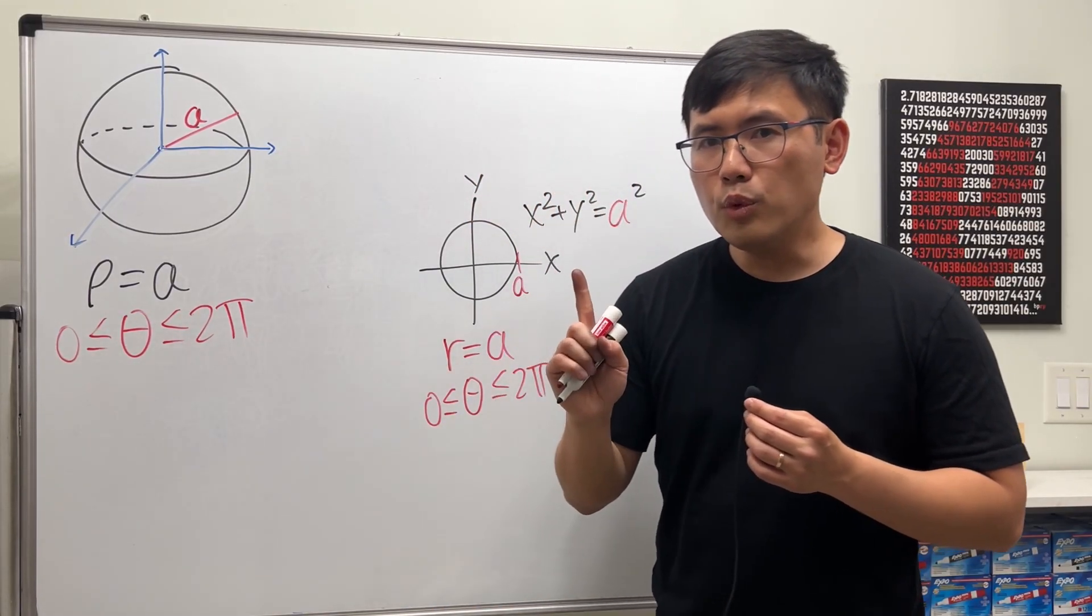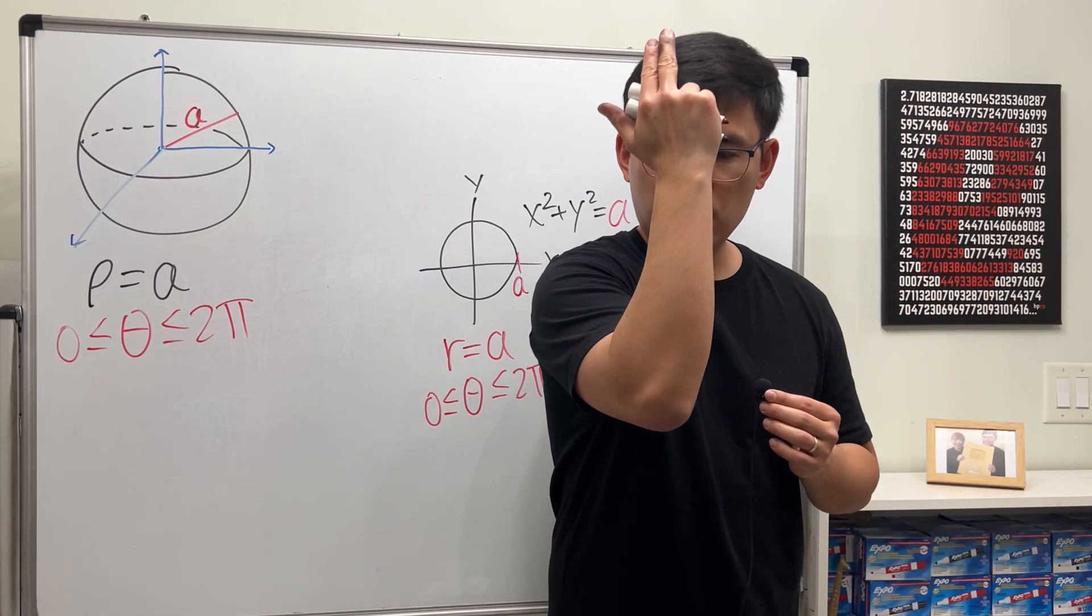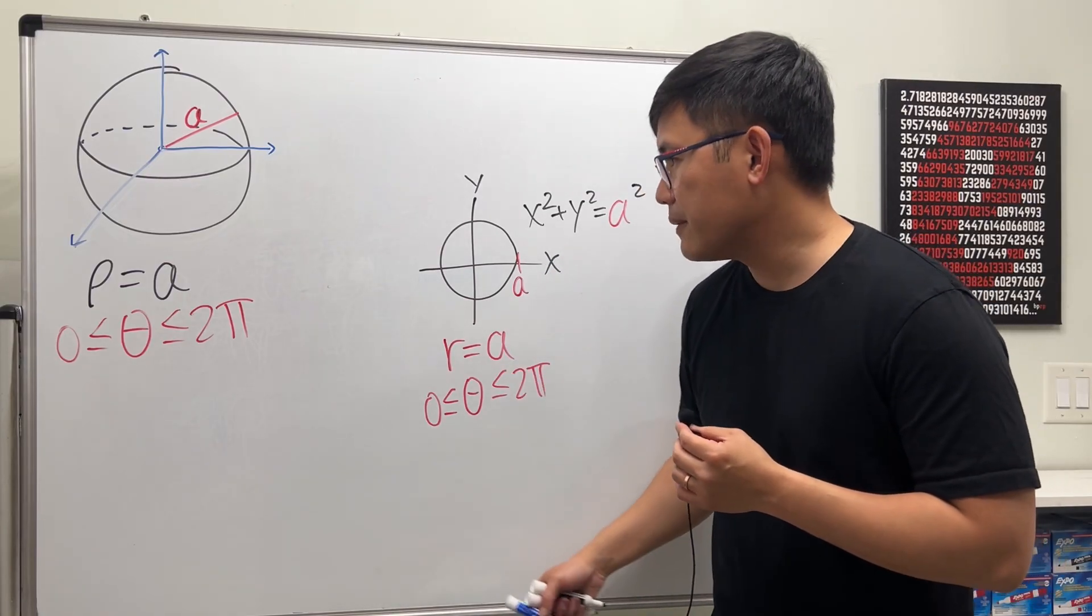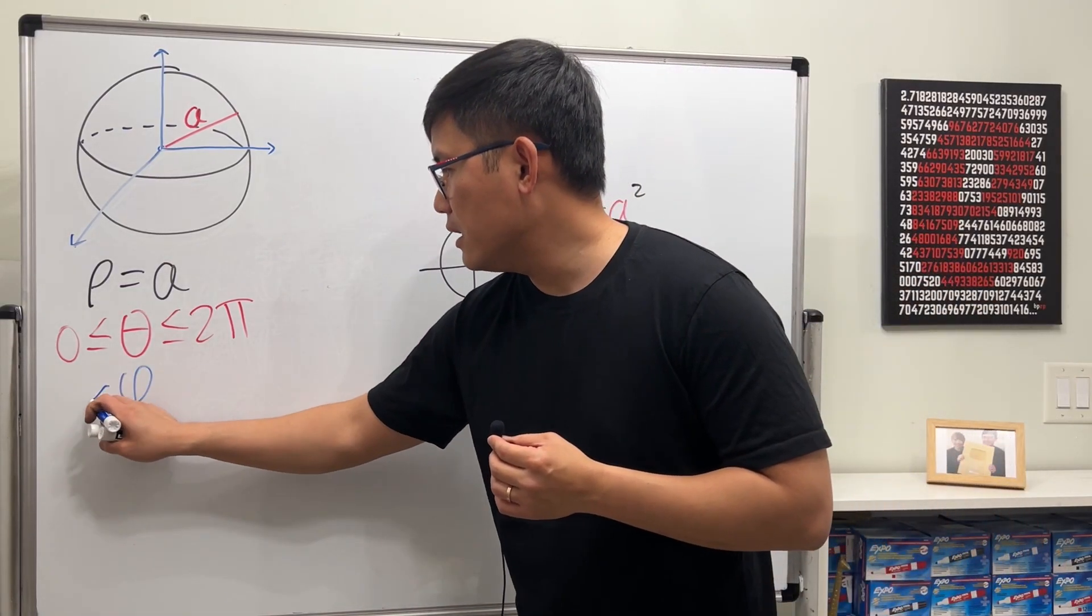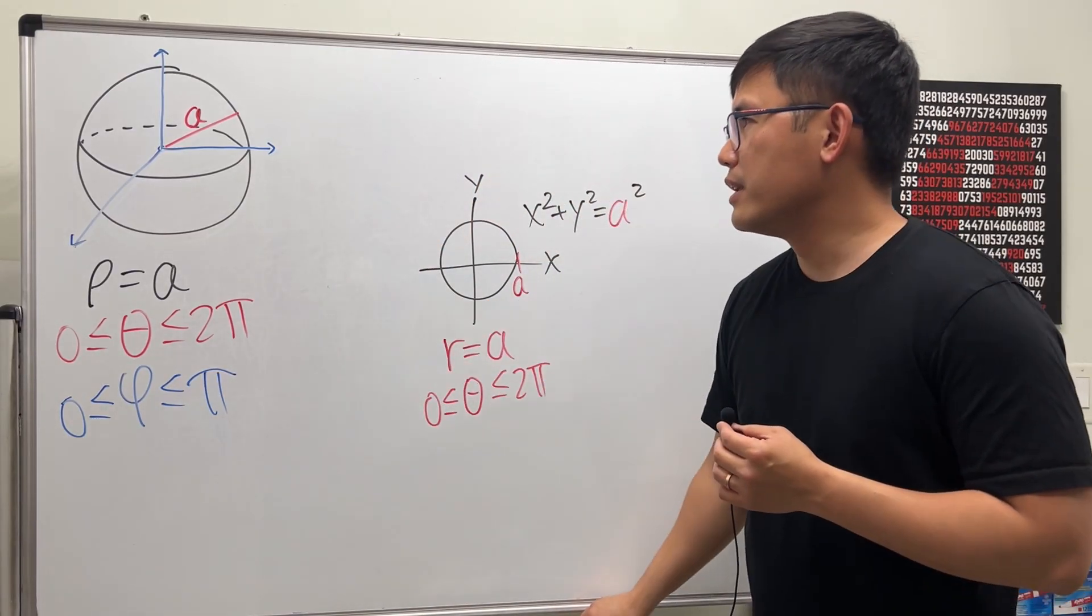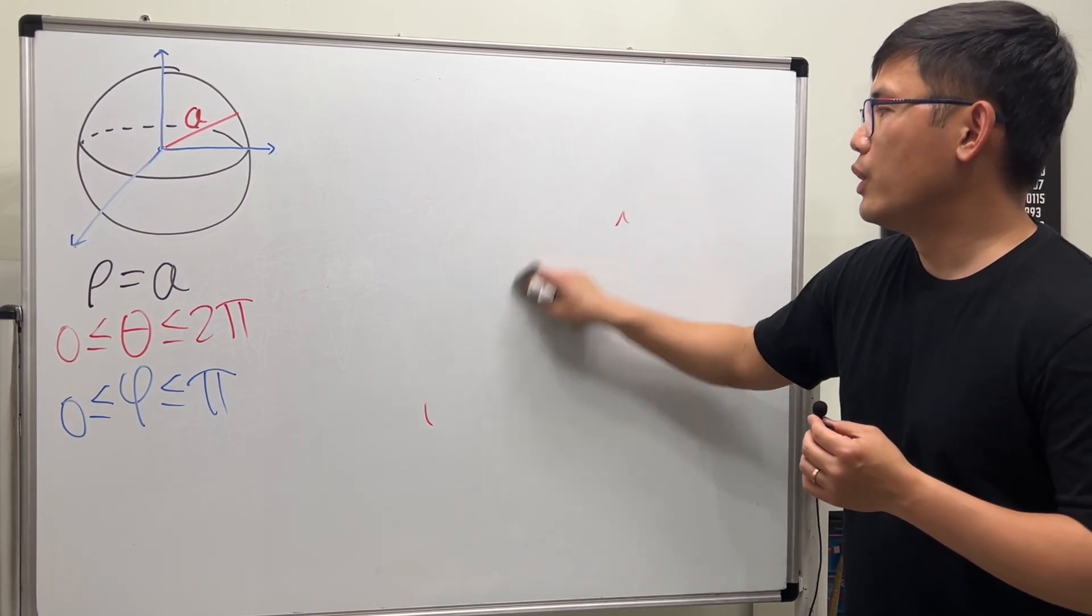And then one more rotation, it's this, right? From 0 to 180 degrees, which is just 0 to π. And that's the angle φ, 0 to π. So this is how we can describe the sphere with spherical coordinates.